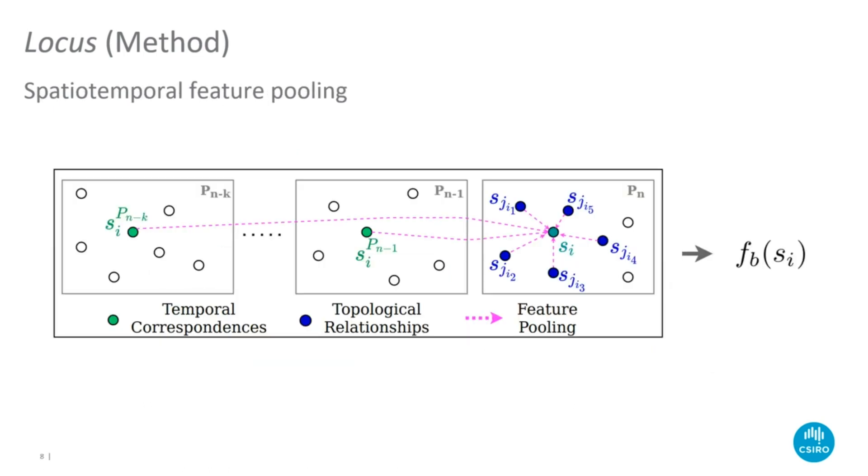A complementary set of features, noted as FB, is obtained using two stages of feature pooling: spatial and temporal. Spatial feature pooling encodes the topological relationships of segments within a single frame. Temporal feature pooling encodes the temporal consistency of segments throughout a frame sequence.